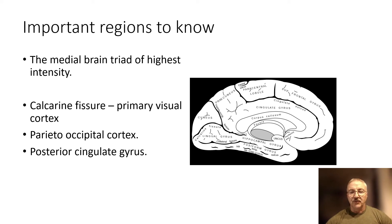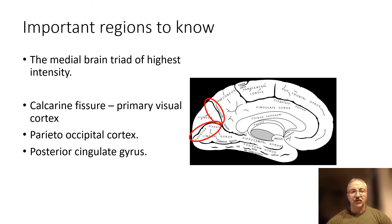There are three regions of high intensity which in a normal brain are often very similar in intensity: around the primary visual cortex and calcarine sulcus, the parietal occipital cortex, and the posterior cingulate gyrus.